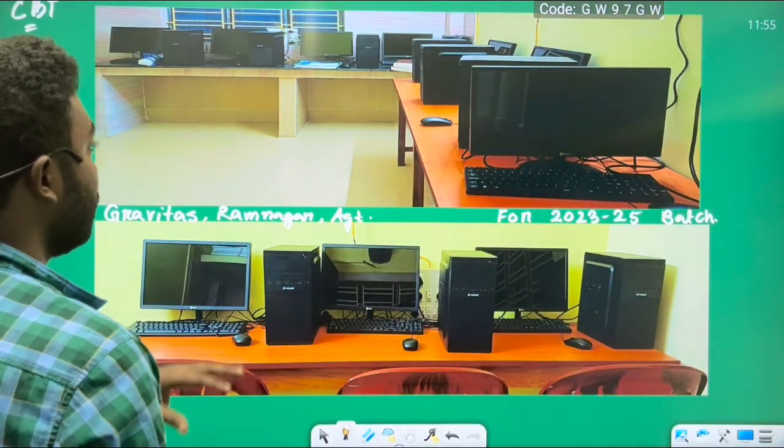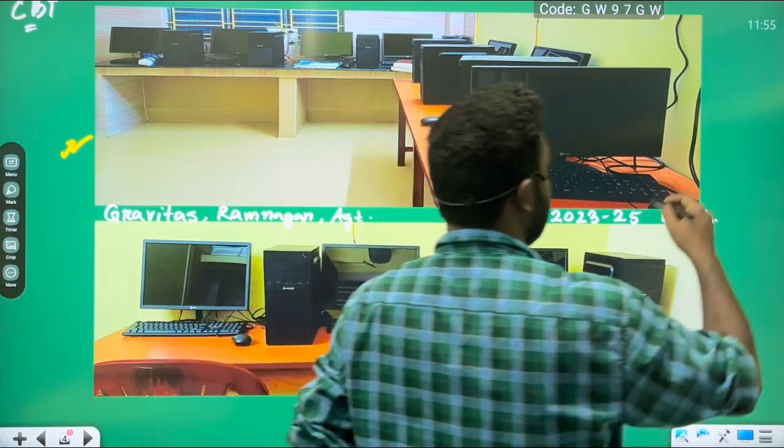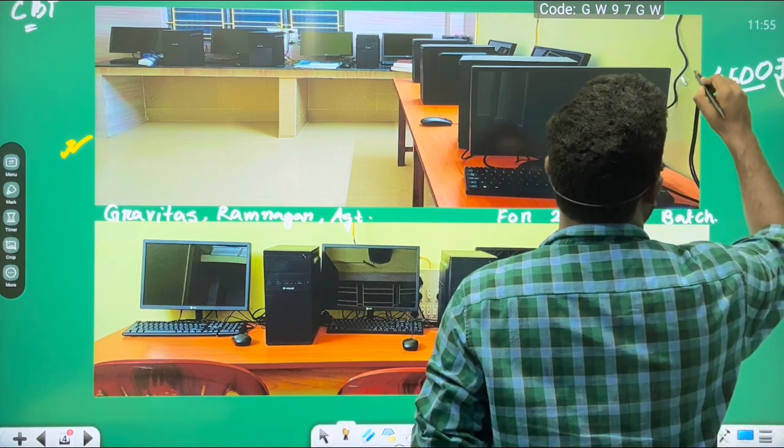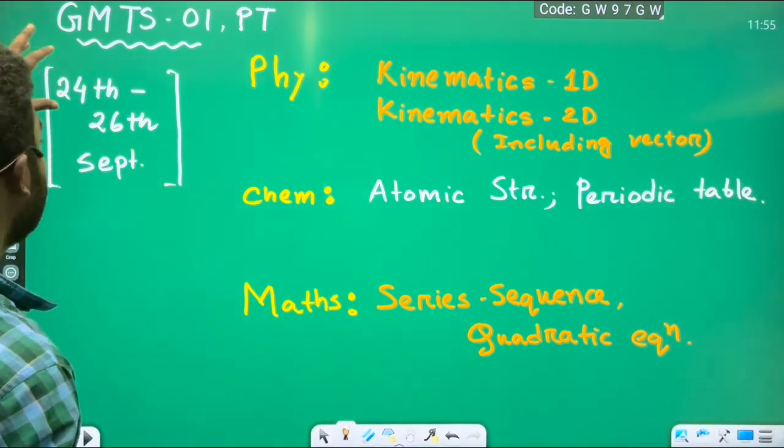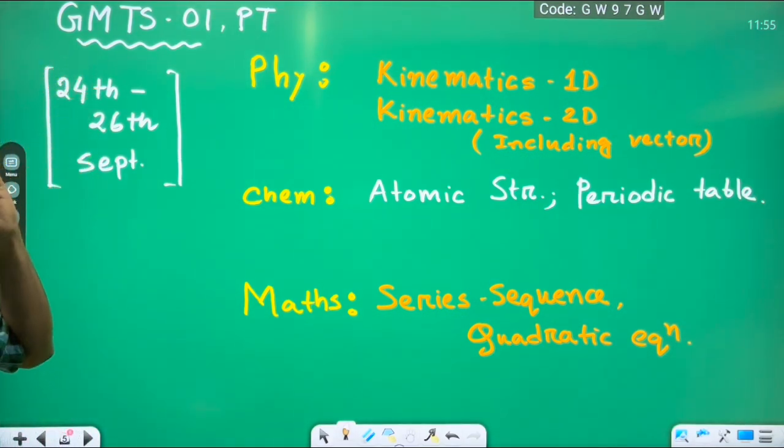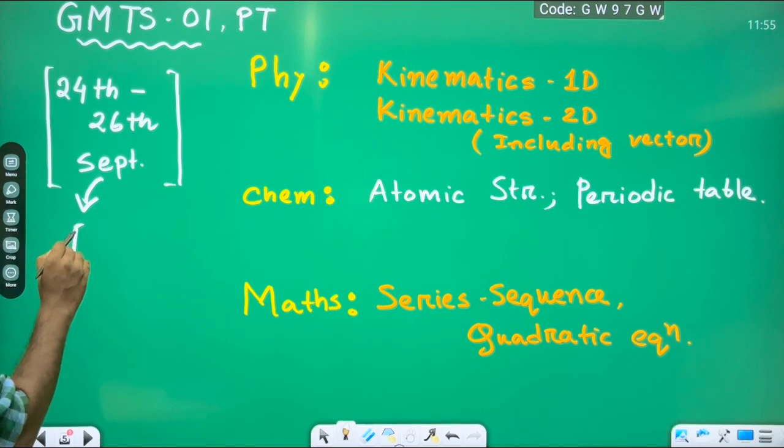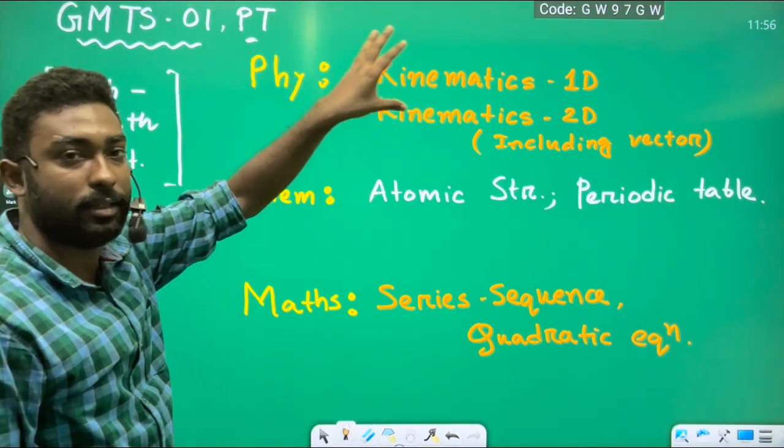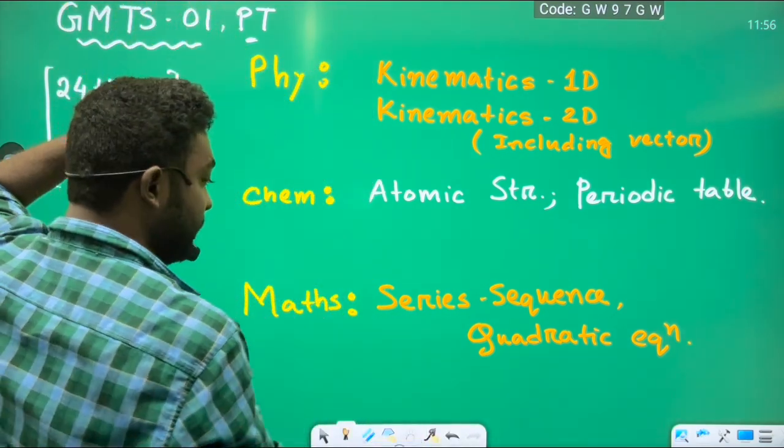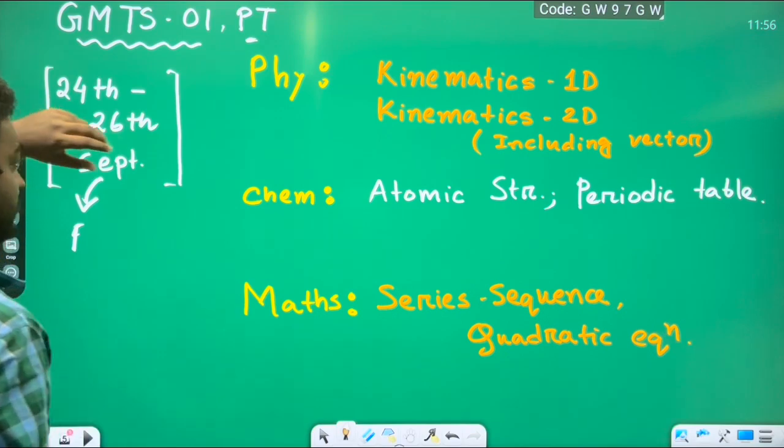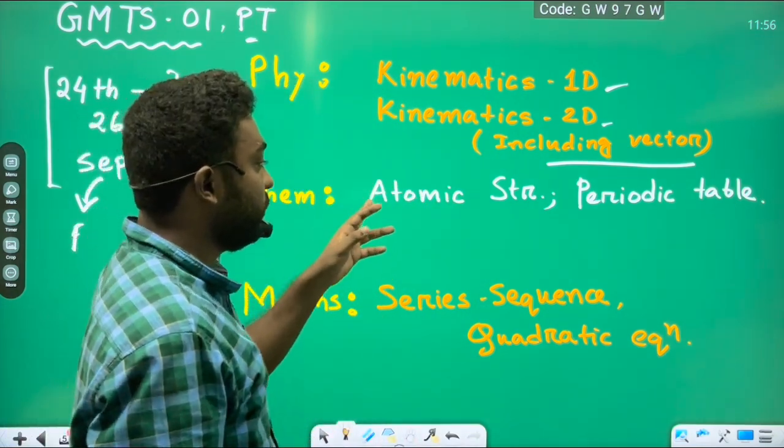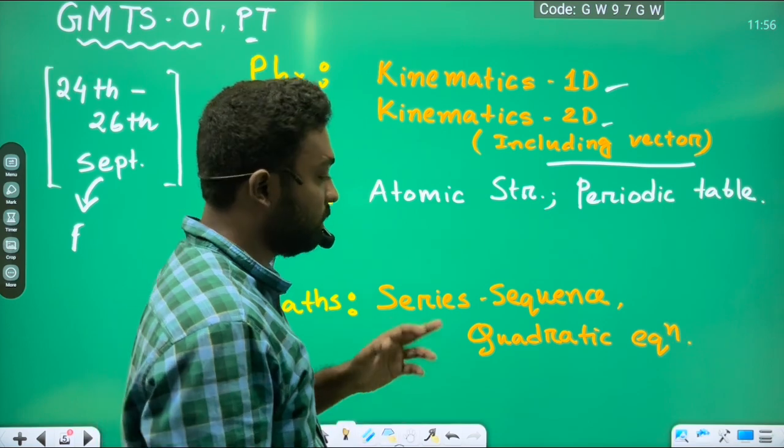Now, let me introduce the syllabus of our test. This is a CBT room. And entire test costing for entire test series for students will be 4500 rupees. You can pay and opt for the test and test series is starting from 24th to 26th September. And if some have school exam during these dates, you can ask for a different date from me. So, these are part tests GMTS 1, 2, 3, 4. GMTS means Gravitas Mains Test Series and GNTS means Gravitas NEET Test Series. For the first test of mains, the syllabus will be kinematics 1D, 2D, obviously vector included in 2D. And chemistry will be atomic structure, periodic table, maths will be series and sequence and quadratic equation.